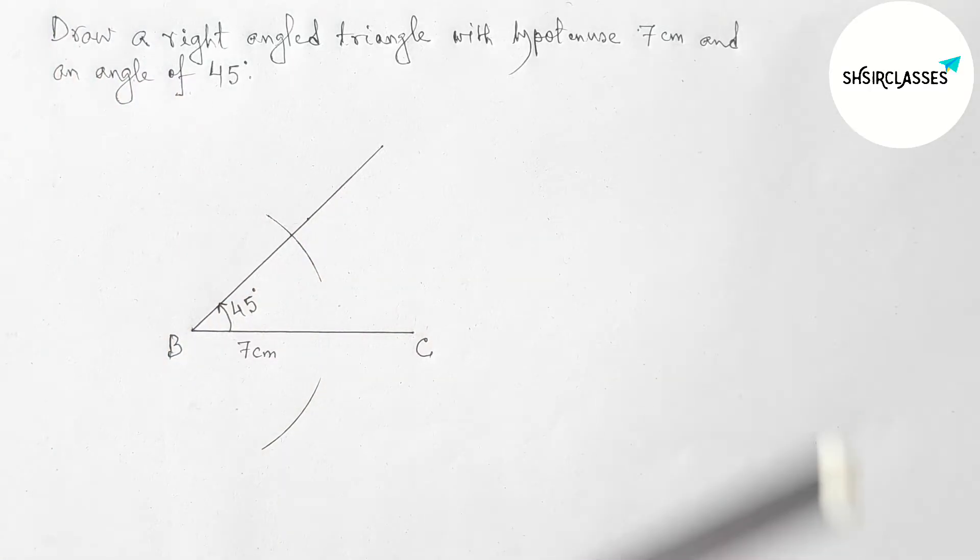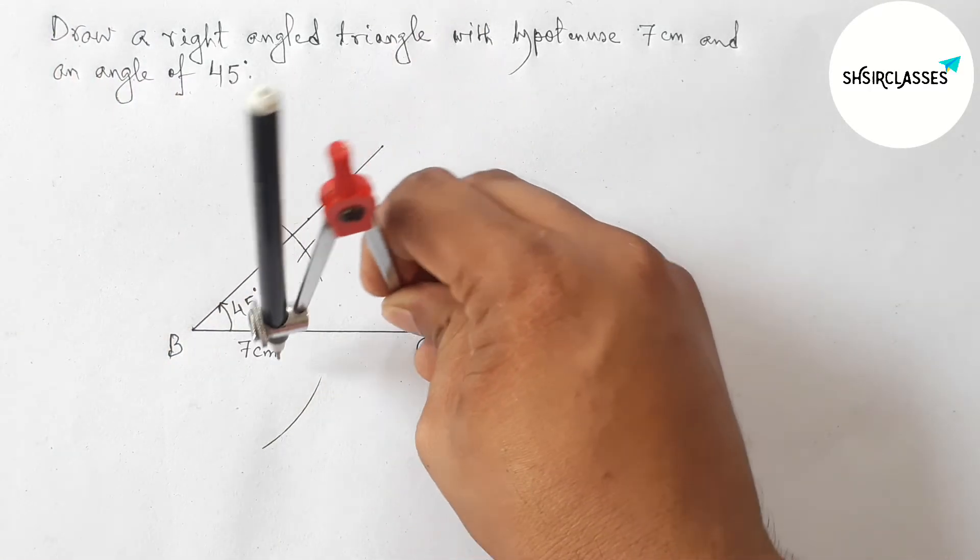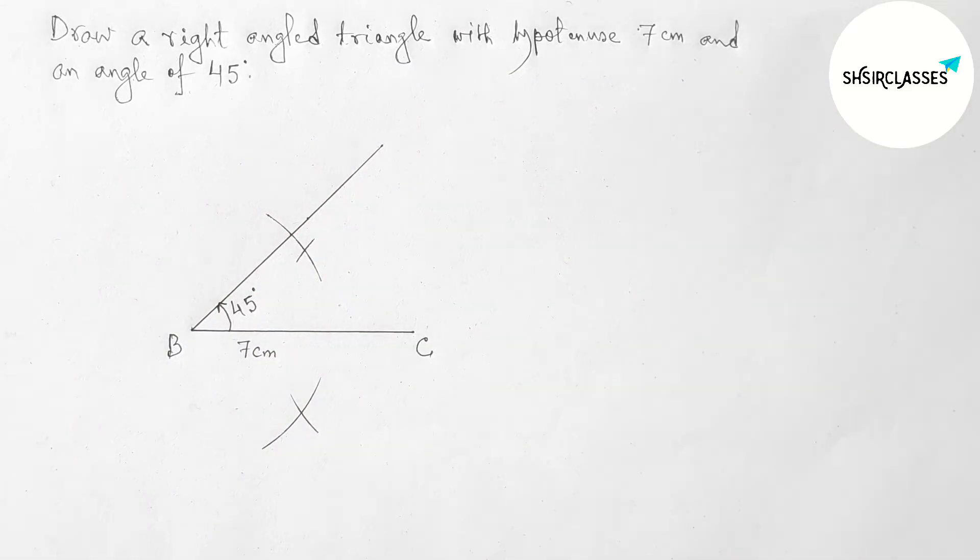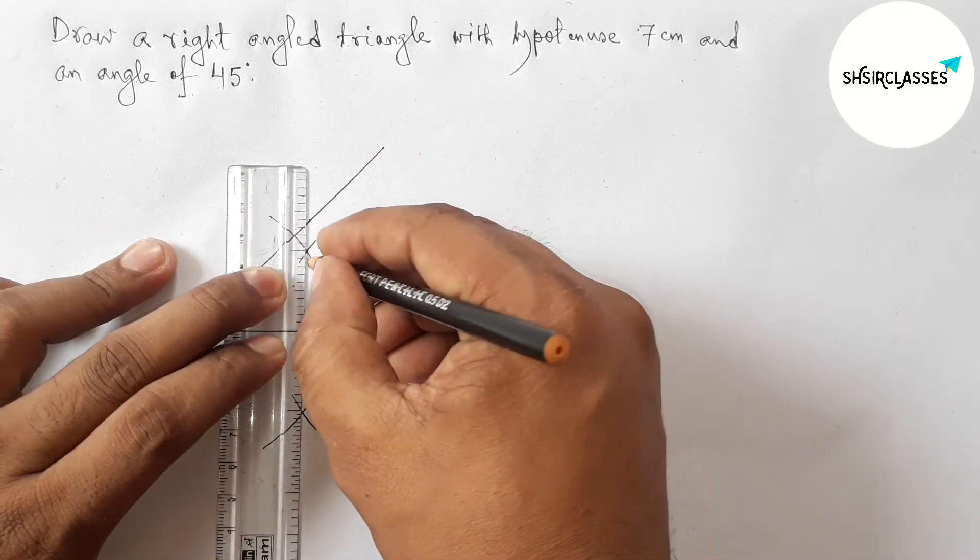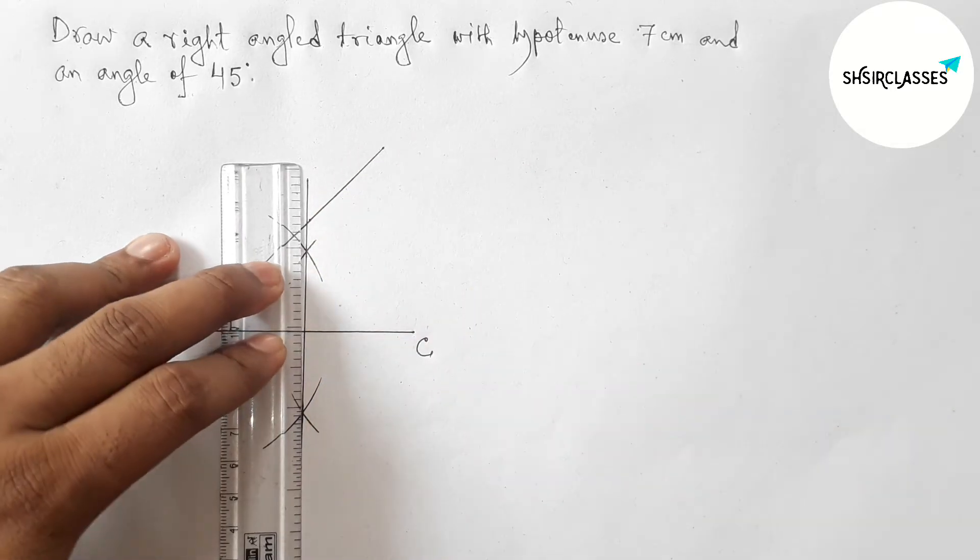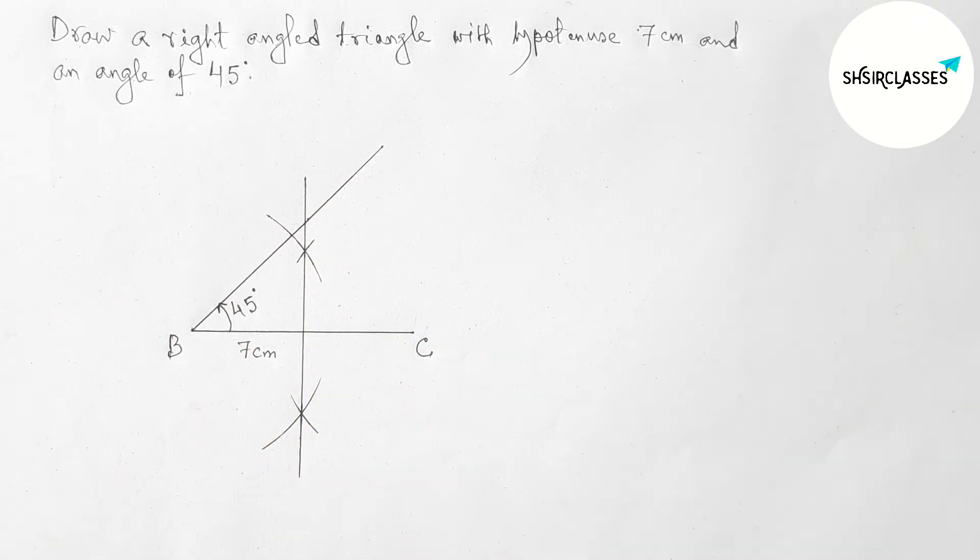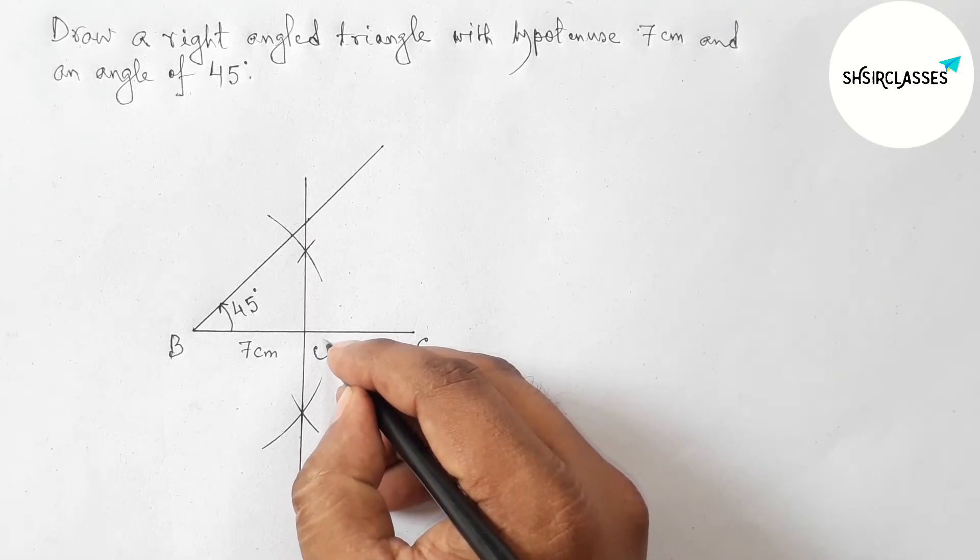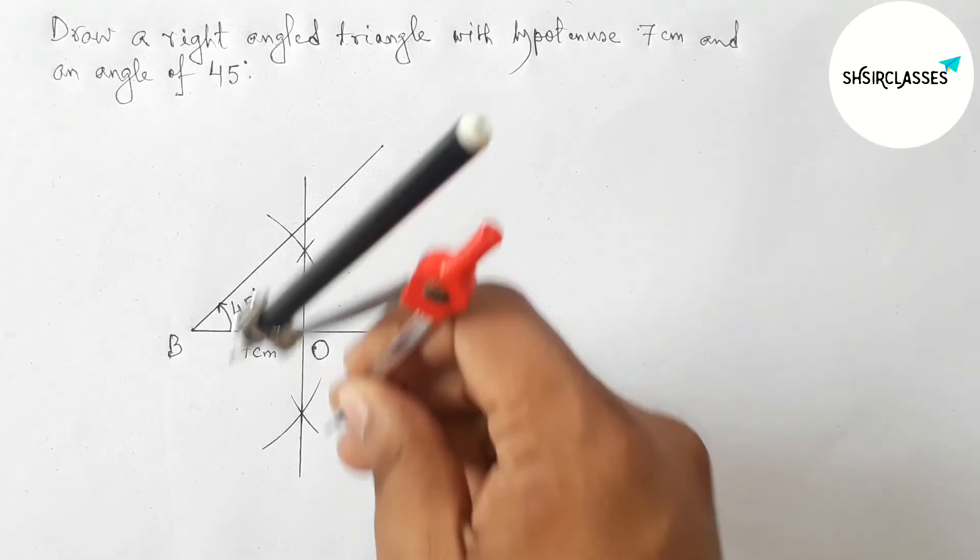Now putting the compass on the point C and taking same length, cut here and cut here. Now joining this line which meets the line BC and the line of the 45 degrees. So taking here point O.